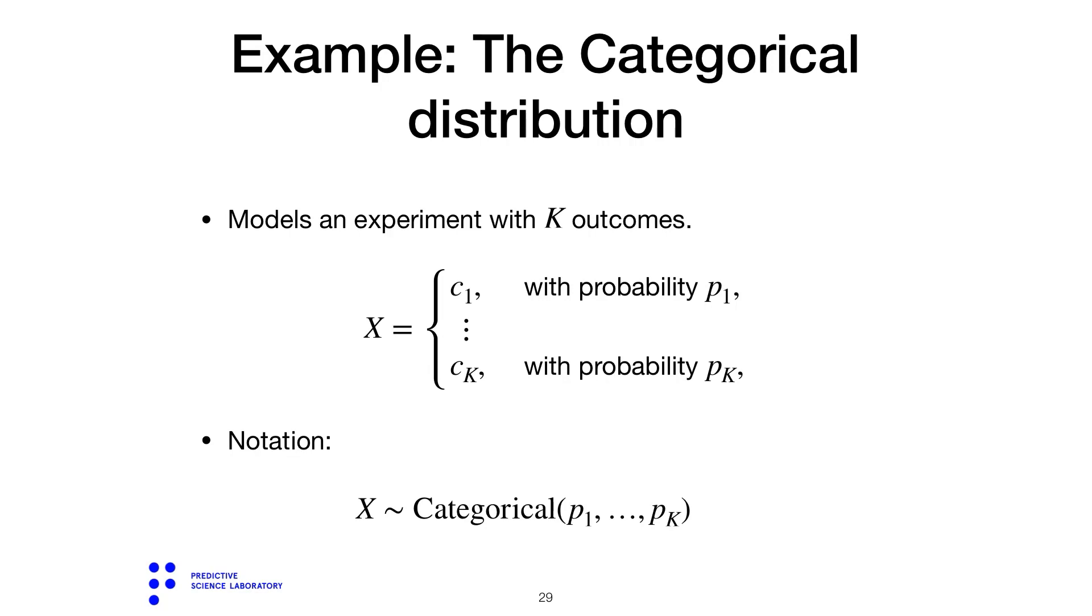For example, 0 to K minus 1, or ABCD, or cat, dog, frog, whatever it is that X really represents. Each one of these labels occurs with a specific probability, so the first label occurs with probability p1, the second label with probability p2, the third label with p3, and so on.